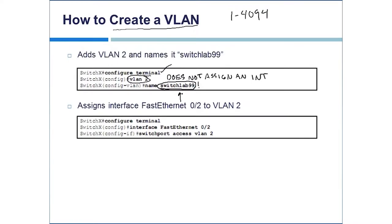Once you've set the name, all you have to do is put the name in, type exit, and you'll be back in configuration mode — not in the config VLAN mode. From there, the next thing you do is go to the port you want to assign the VLAN to. Importantly, this is basically an access port. We are going to see and talk about trunk ports later.